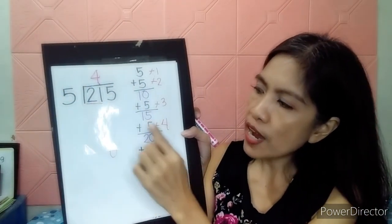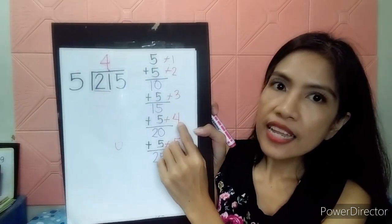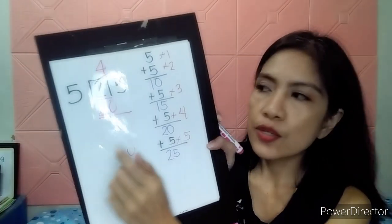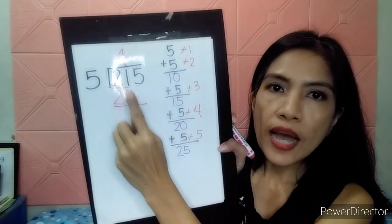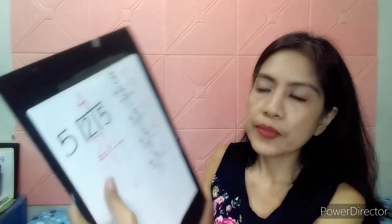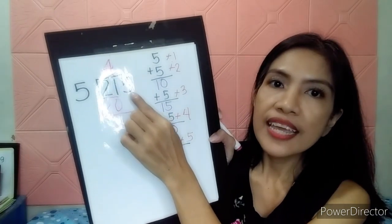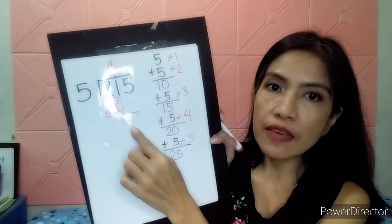So, 4 times 5. 4 times 5 equals 20. And, let's do 1 minus 0 is 1. And, 2 minus 2 is 0. Is there any number here? Yes, there is 5. So, let's bring down 5 here. Let's write.